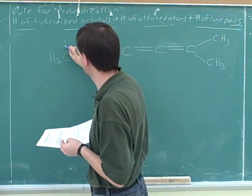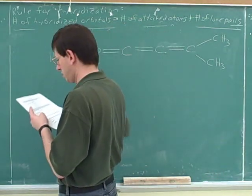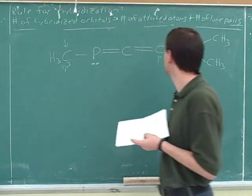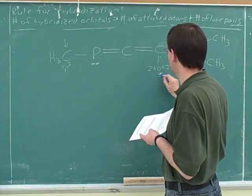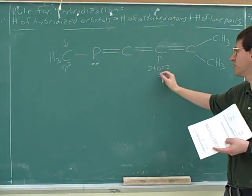What's the hybridization of this atom? SP. Good. There's two attached atoms and no lone pairs, so two hybridized orbitals. We haven't seen a carbon with two double bonds on both sides, but that would be this.